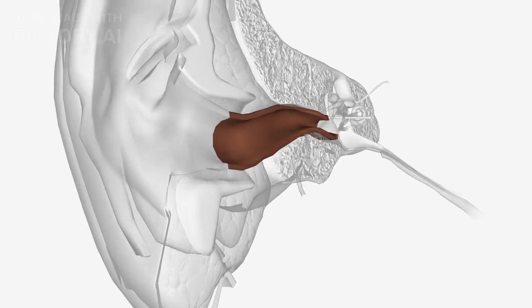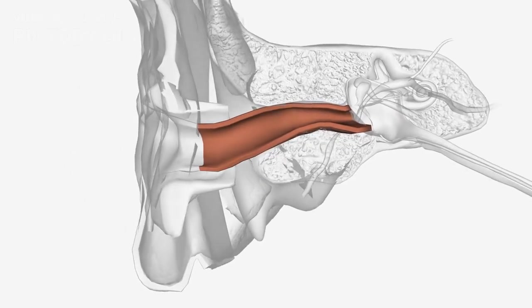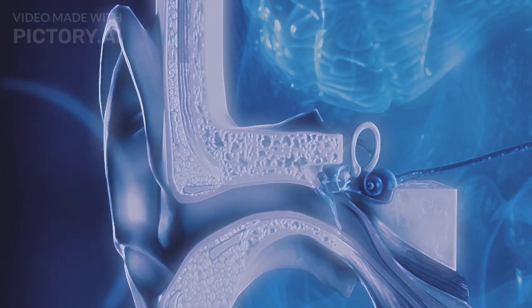The outer ear consists of the pinna and the ear canal. The pinna, the visible part of the ear, collects sound waves from the environment and directs them into the ear canal.